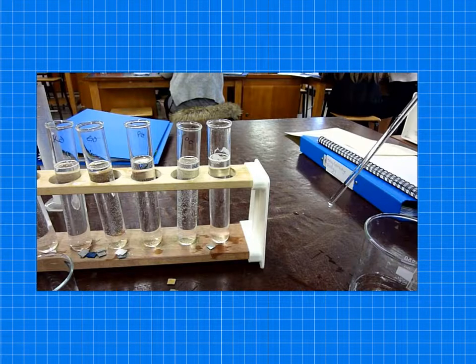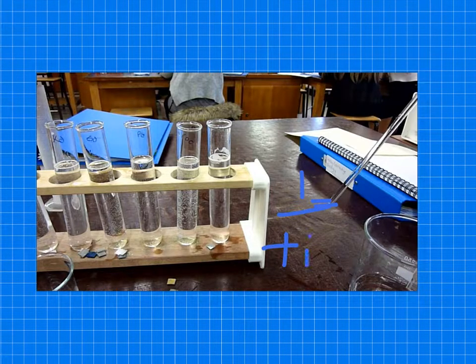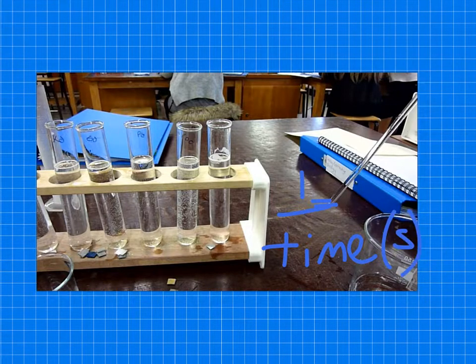So once the students have repeated this three times, and they've done it at each concentration, they worked out the mean, and then they needed to work out the rate of reaction. So rate of reaction is one divided by time in seconds. And they worked out the rate of reaction. So I'll show you the kind of results they should have got.